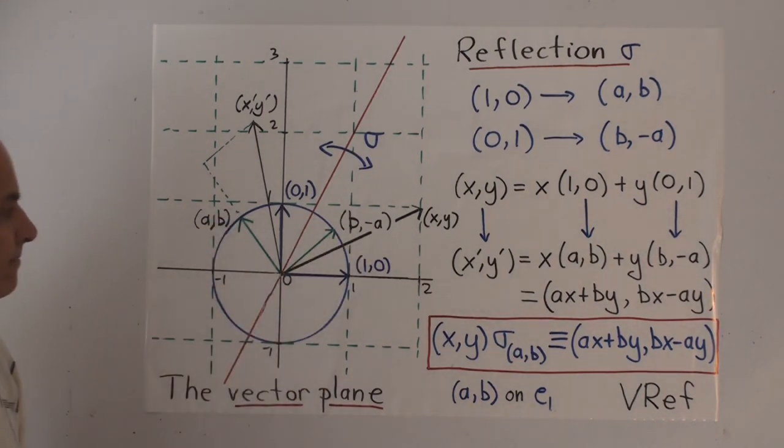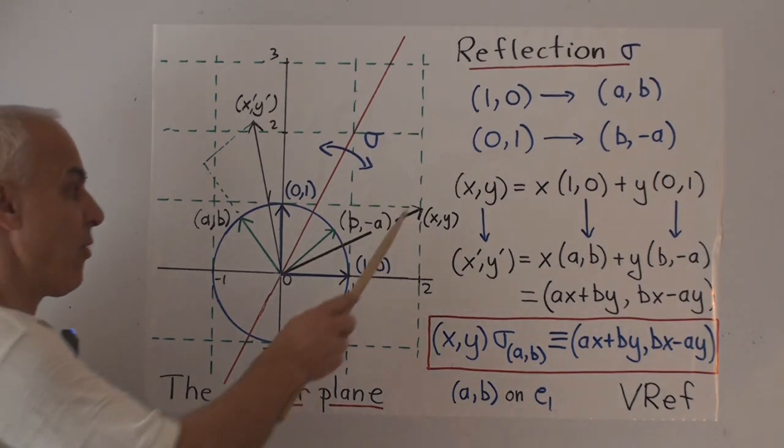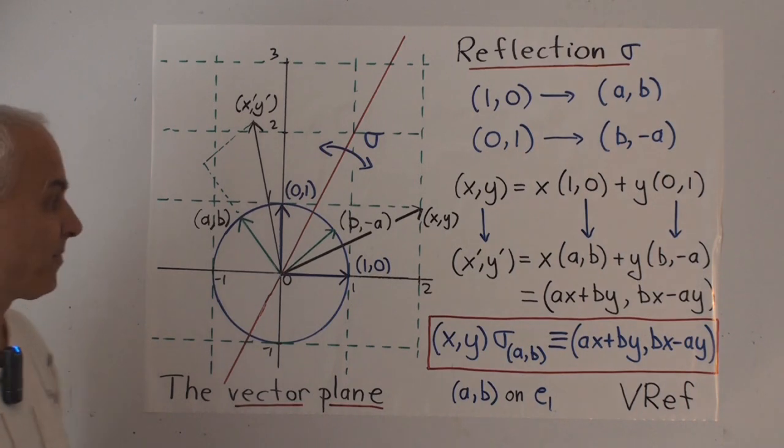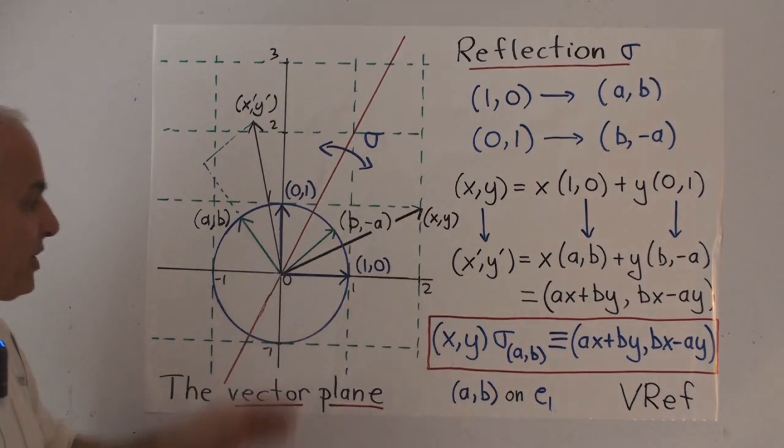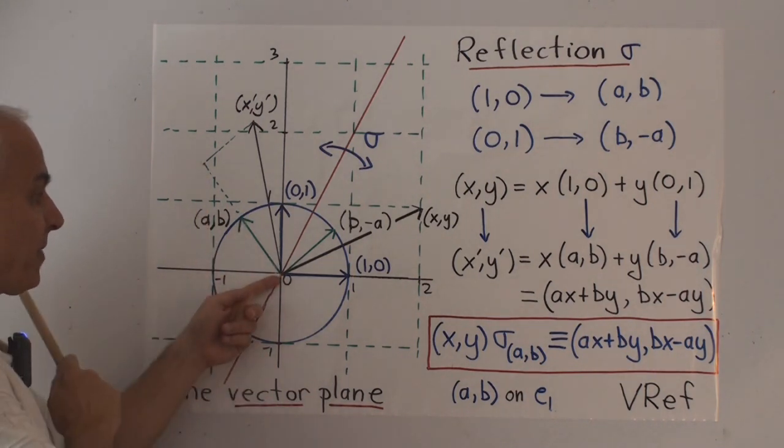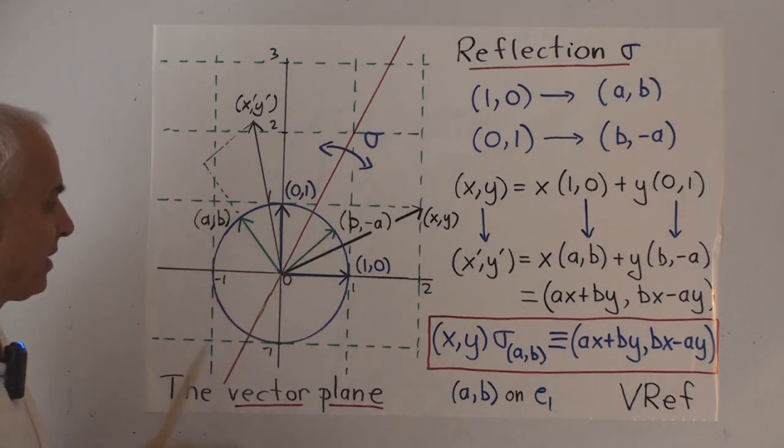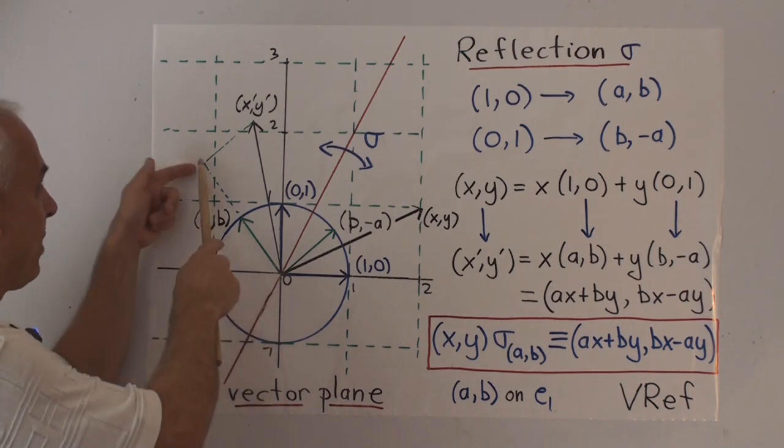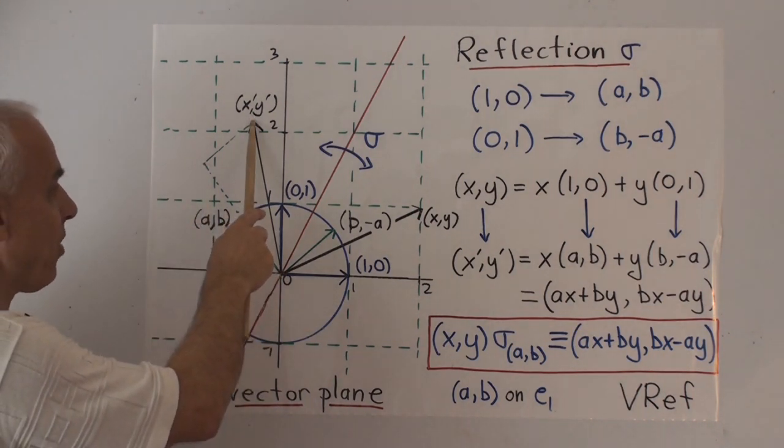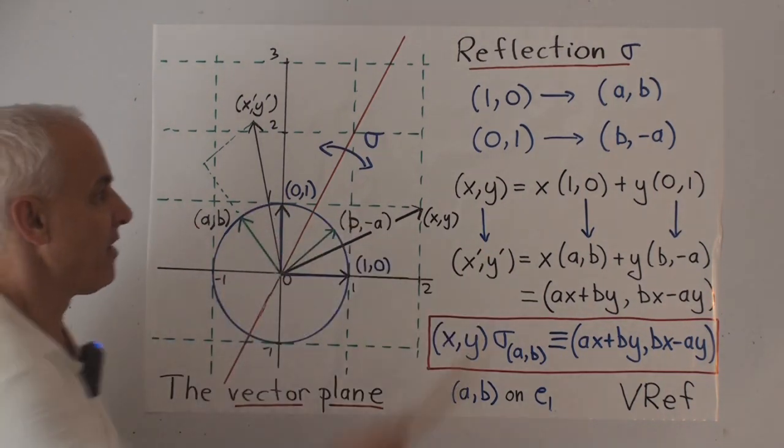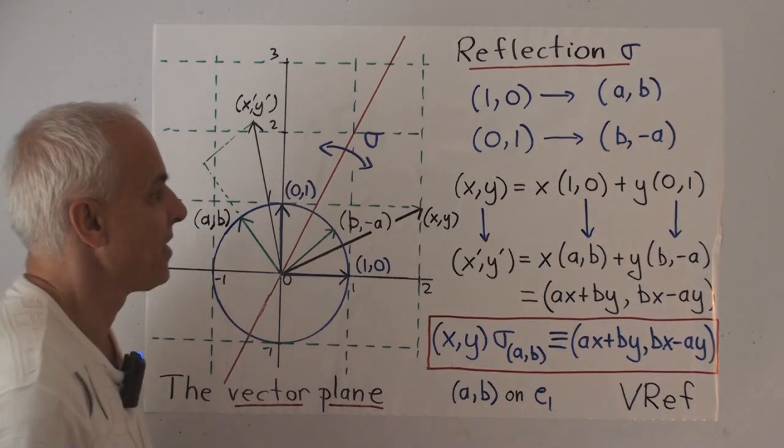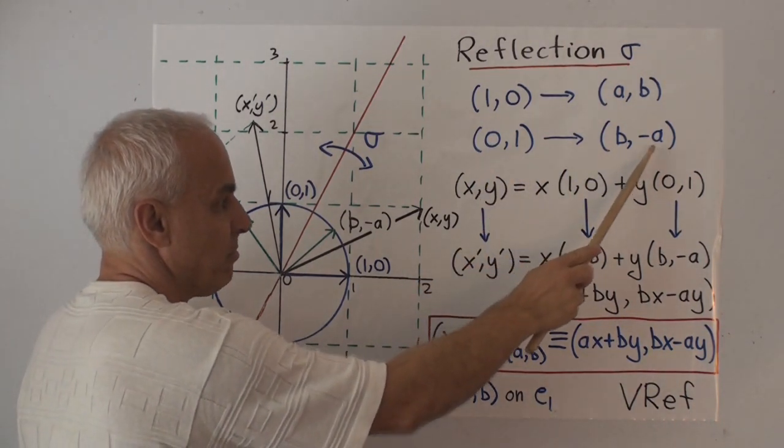And now we can use that to describe what happens to a general vector, say x,y. This particular vector x,y is x times 1,0 plus y times 0,1. So its image under the reflection can be obtained by taking x times this vector and adding y times this vector. So we're going up here x times and then adding. There's the image x prime, y prime, the reflection of the vector x,y. And so in general, we're just going to do the algebraic version of that. The vector 1,0 was sent to the vector AB. The vector 0,1 is sent to the vector B minus A.